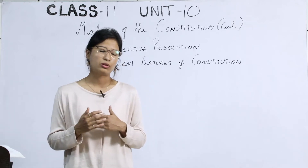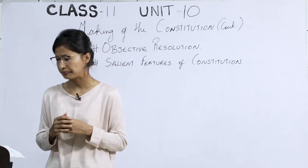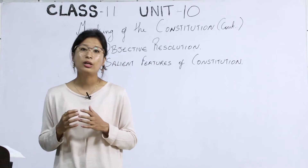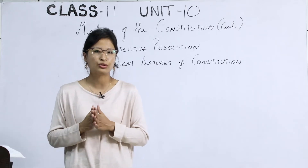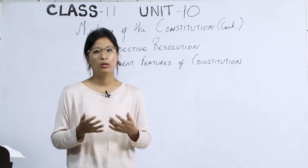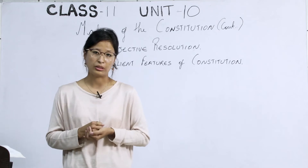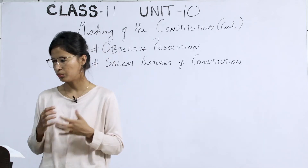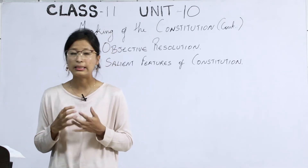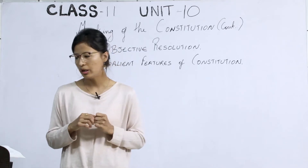There are several main points in the Objective Resolution. Point number one: it declares India as an independent sovereign republic. Independent — she got independence from the British. Sovereign — she has supreme authority. Republic — the supreme power is held by the people through elected representatives.